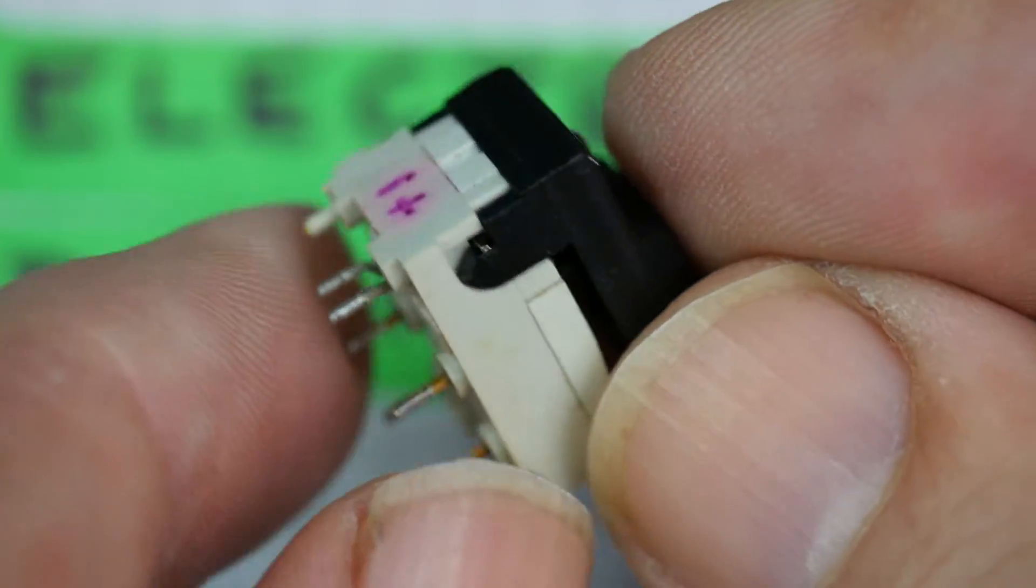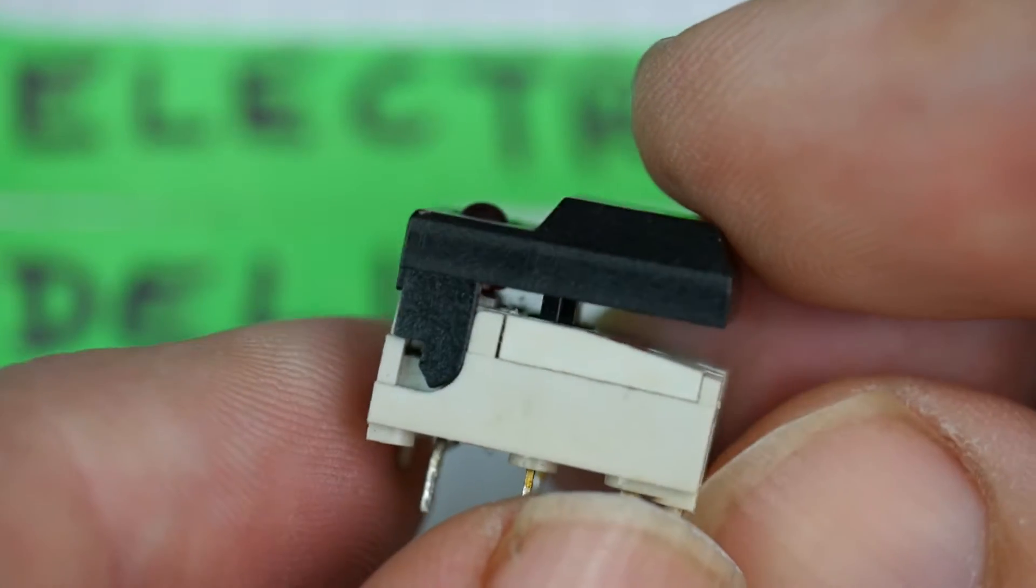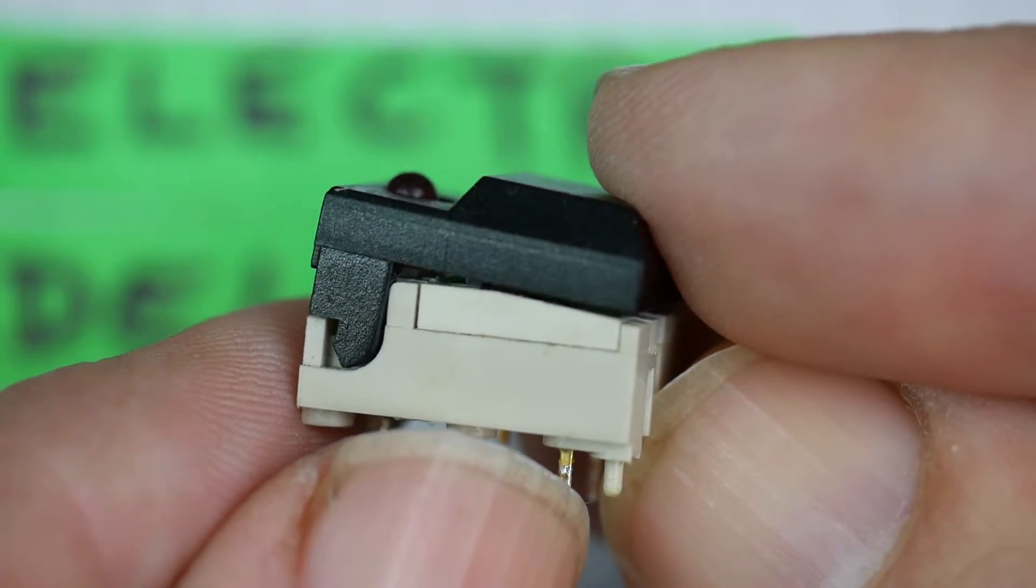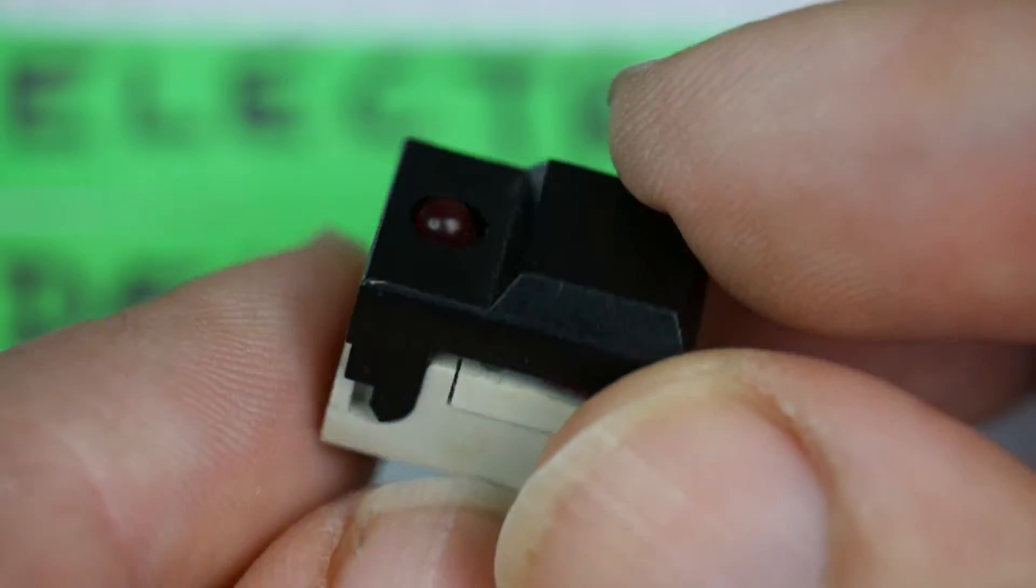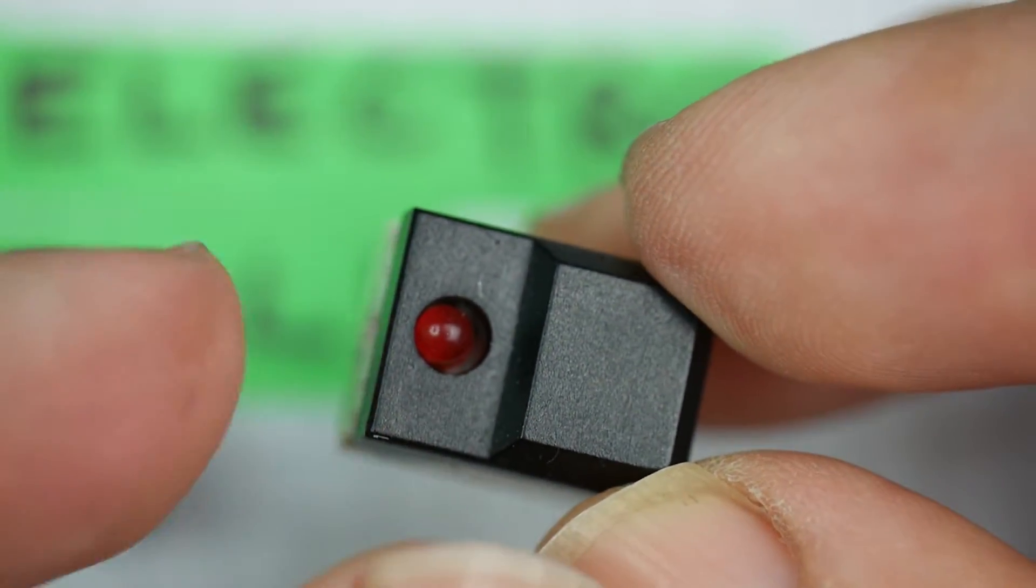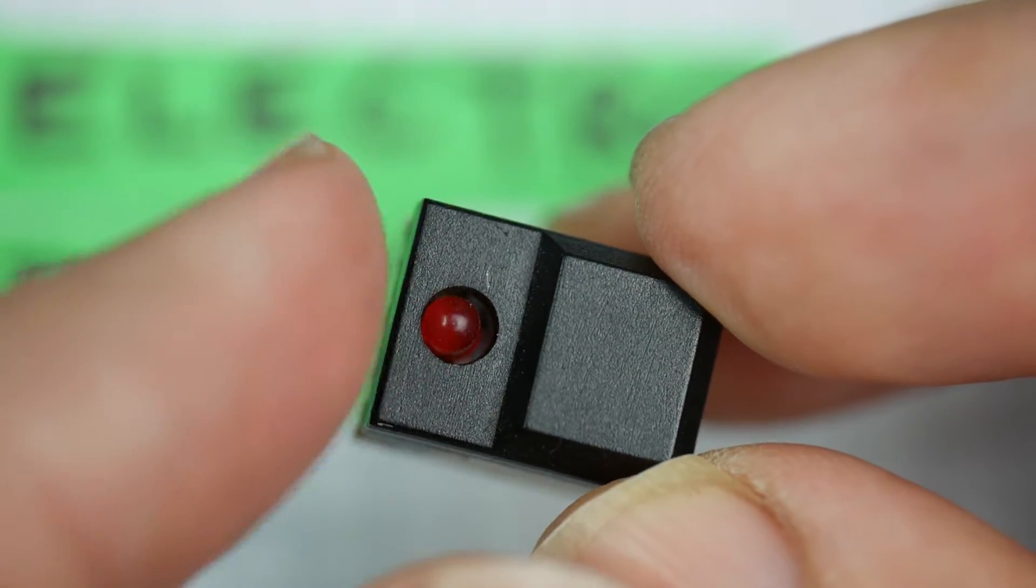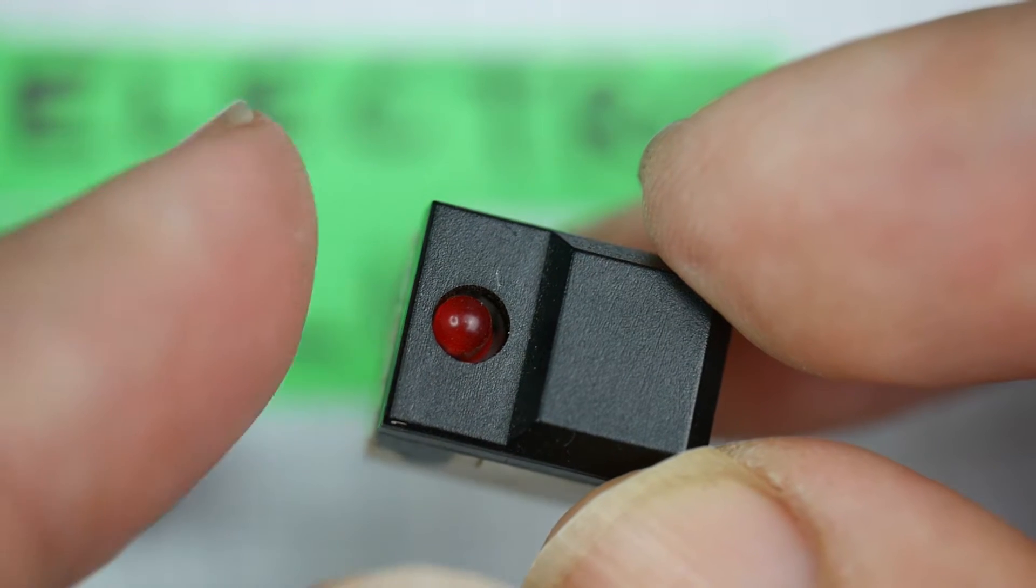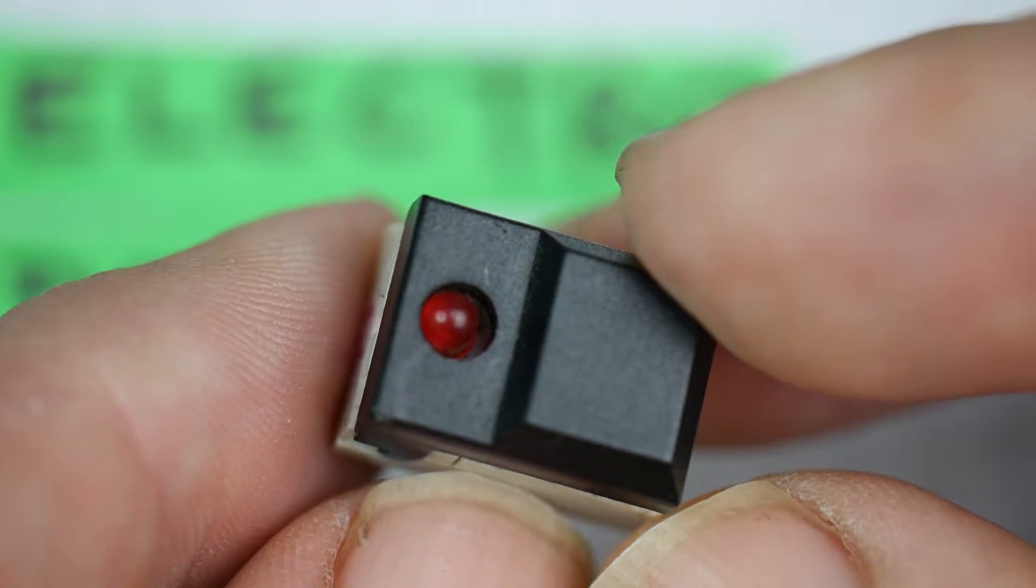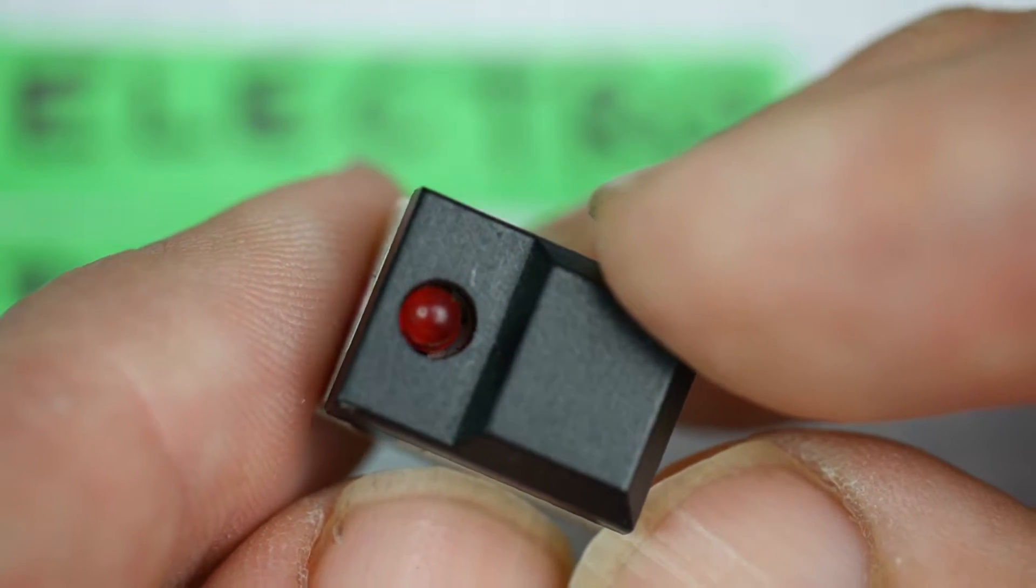There was a whole range of them. This particular one is a momentary switch, so you press it and release it, and it makes and breaks the contact. It has a single LED which can be lit up. They were also available with two LEDs. You could get red and green LEDs. This is before the days of combined red, green, and certainly before the days of blue LEDs.